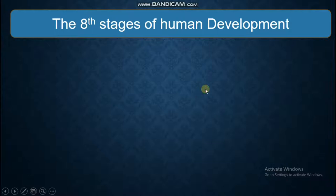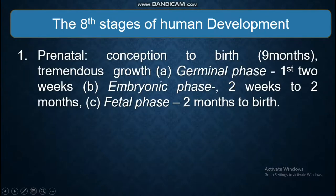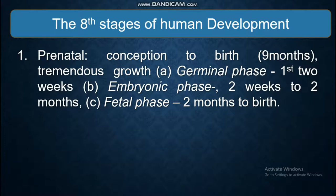The eight stages of human development. Prenatal: conception to birth, nine months — a period of tremendous growth. A) Germinal phase: first two weeks. B) Embryonic phase: two weeks to two months. C) Fetal phase: two months to birth.